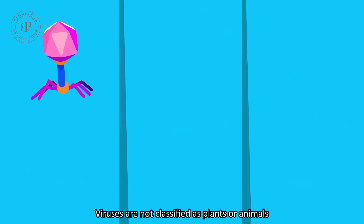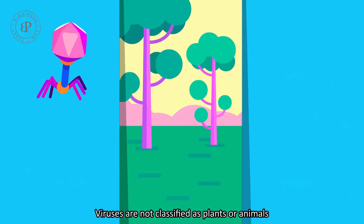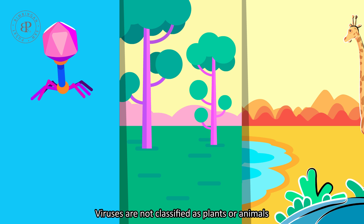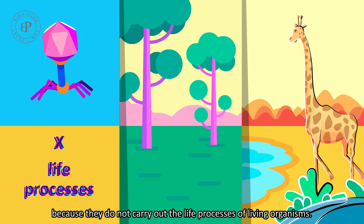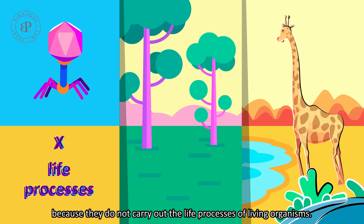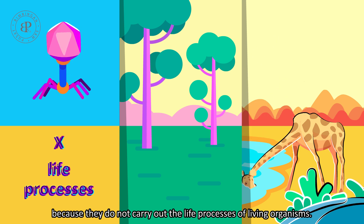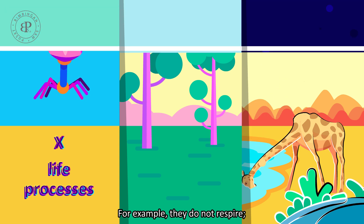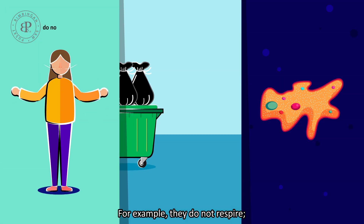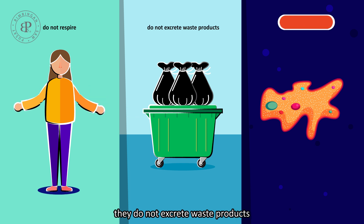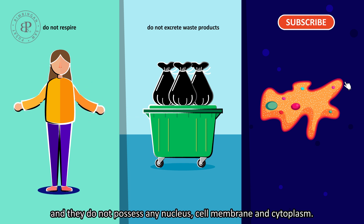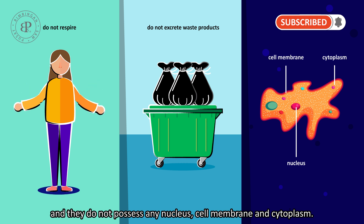Viruses are not classified as plants or animals because they do not carry out the life processes of living organisms. For example, they do not respire, they do not excrete waste products, and they do not possess any nucleus, cell membrane, and cytoplasm.